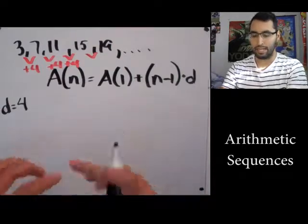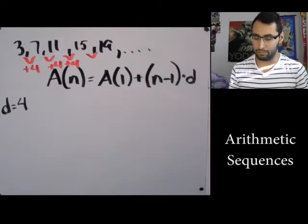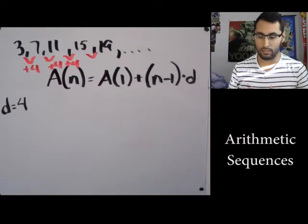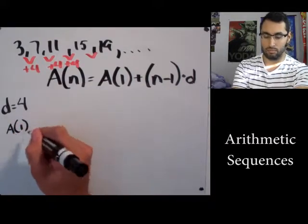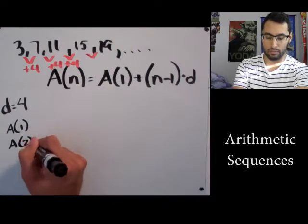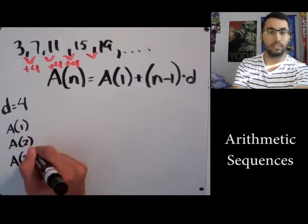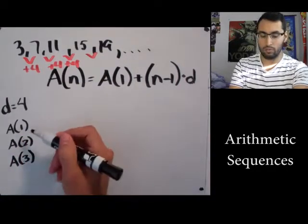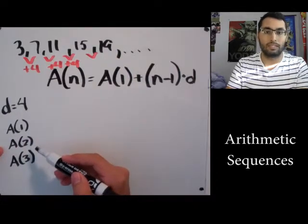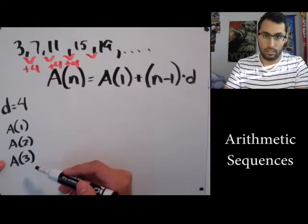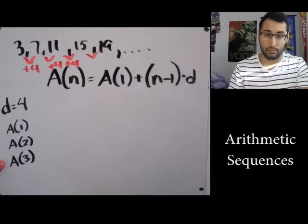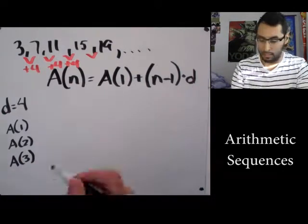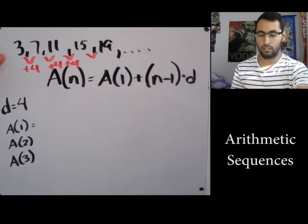Now this stuff over here, A of whatever we have - if I had A(1), A(2), A(3), whatever - all those things represent is A(1) represents my first term, A(2) represents my second term, A(3) the third term, A(57) is the 57th term. That's all that means, it's just a different way of writing it.